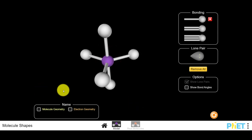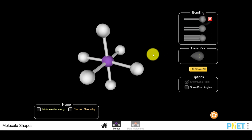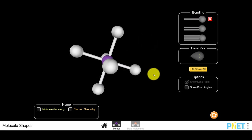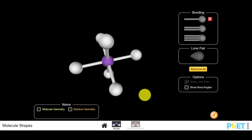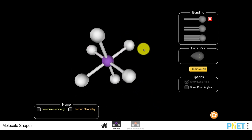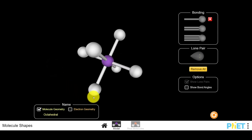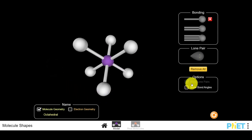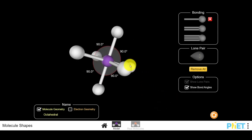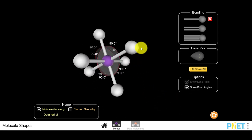If you add a sixth site to the central atom, like the sulfur hexafluoride, you get something that looks like this. And this is a nice symmetric shape. This is referred to as an octahedral shape. And as you look around the octahedral shape, you can see nice symmetric 90 degree bond angles between all your bonds.